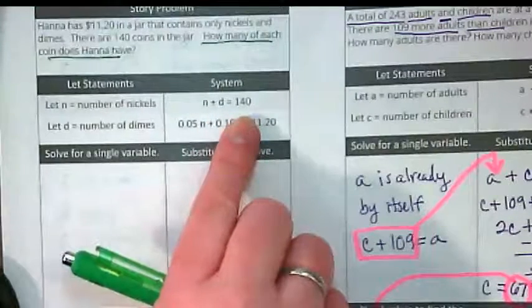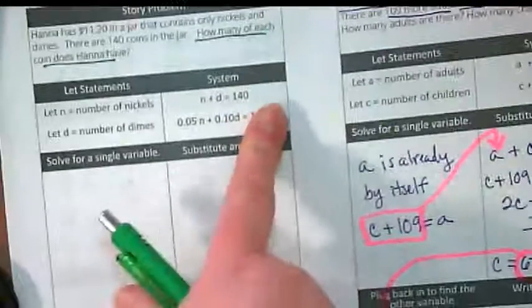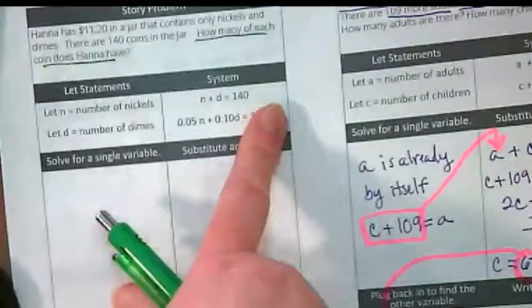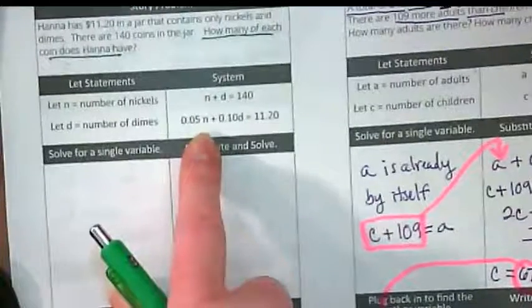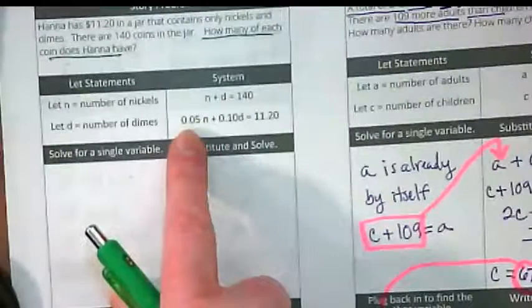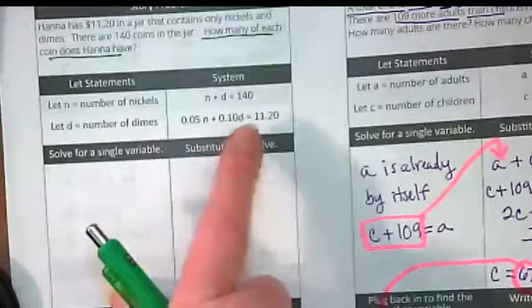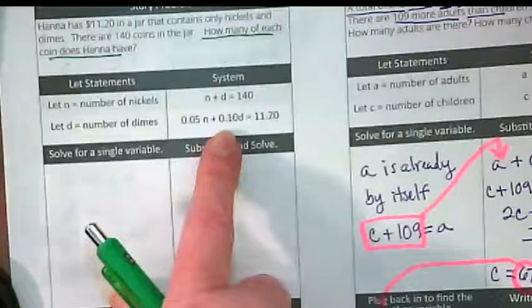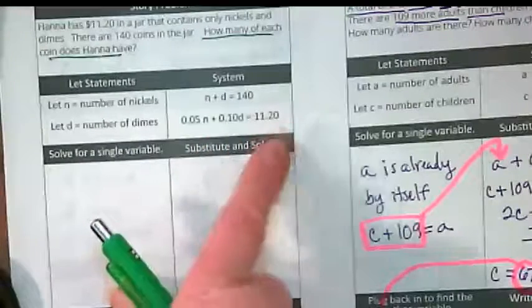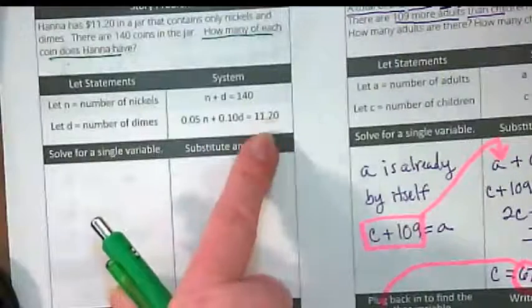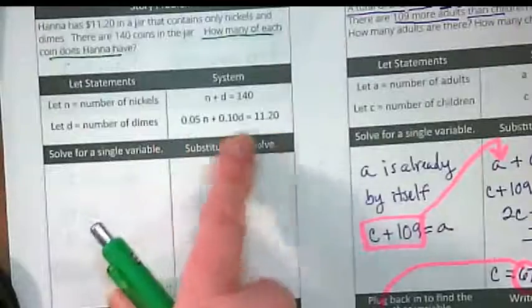The let statements are done for us. We're going to let n be nickels and let d be dimes. The equations in the system are done for us. n plus d equals 140 is just counting them. When I count up my nickels and dimes, I get 140 coins. But because these coins have a value, the second equation is saying however many nickels there are, a nickel is 5 cents, a dime is 10 cents, and when I count them up and multiply them by their value, I get $11.20. That's what this equation is saying.